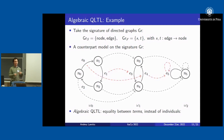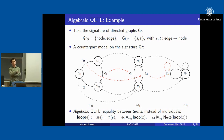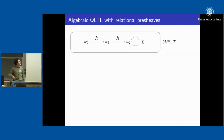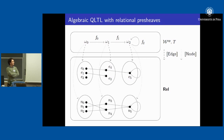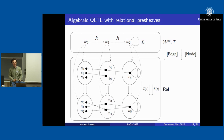As a simple example, consider the signature of directed graphs: two sorts — node and edge — with function symbols source and target from edge to node. We can model this with a graph that gradually shrinks over time, providing relations between nodes and between edges corresponding to graph homomorphisms where the relations are not necessarily functions. We can then extend the logic to reason about terms — for example, expressing that an edge e is a loop, or that e4 will become a loop at the next step.